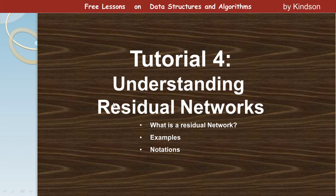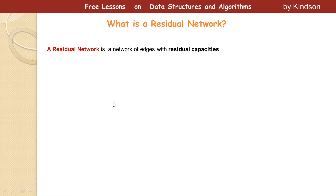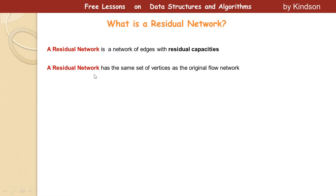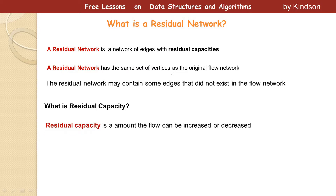So what is a residual network? You already know what a flow network is. A residual network is a network with edges that have residual capacities. In a flow network you already know about capacities of the edges, but in a residual network the capacities of the edges are residual capacities. A residual network has the same set of vertices as the original network, but the residual network may contain some edges that did not exist in the original flow network.